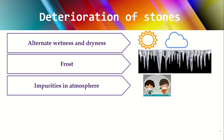Next we have impurities in the atmosphere. Our atmosphere generally contains impurities which show a very bad effect on stones. For example, in towns or places which have industries, the industry releases gases or fumes containing acids, chemicals, and impurities into the atmosphere. Once these impurities fall on stones — say stones made of limestone like marble — these impurities will start reacting with the carbonate inside the lime and hence it starts decaying.